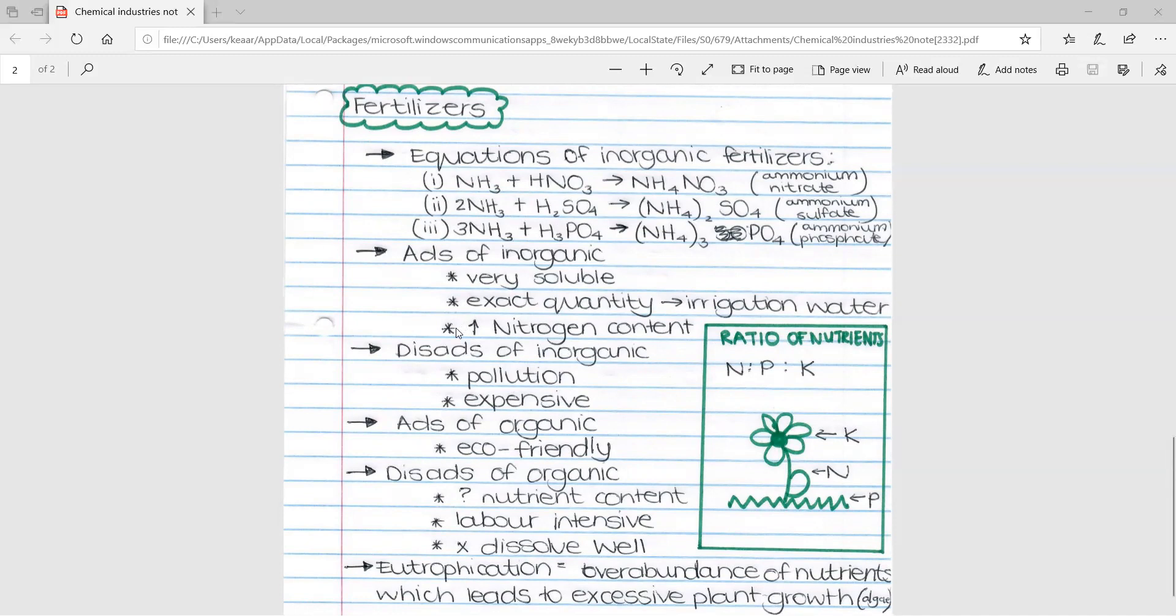And the last advantage is that all of these fertilizers contain a very high nitrogen content, which we will later learn is very good for strengthening the leaves of plants. You can see because of the ammonia, it has a high nitrogen content.